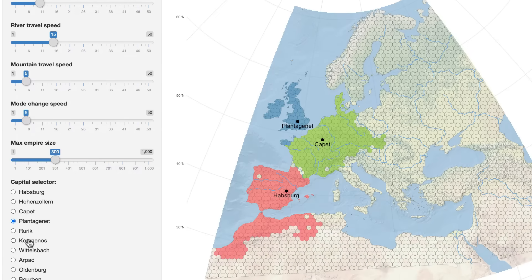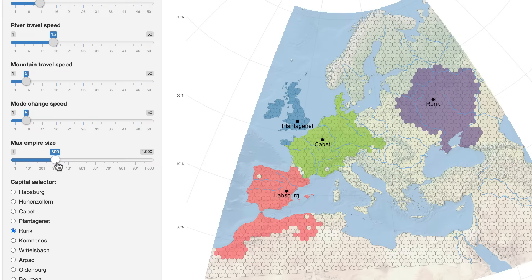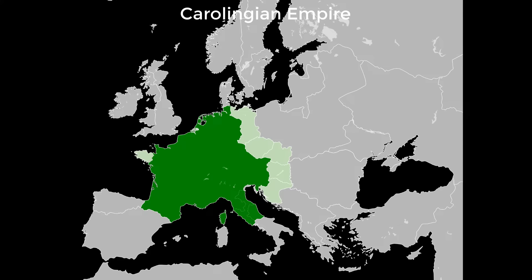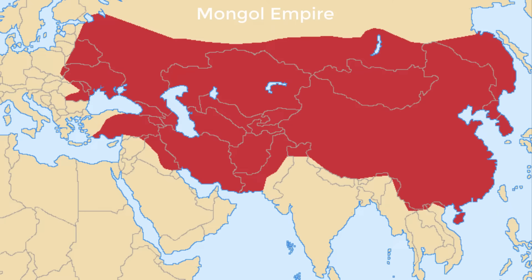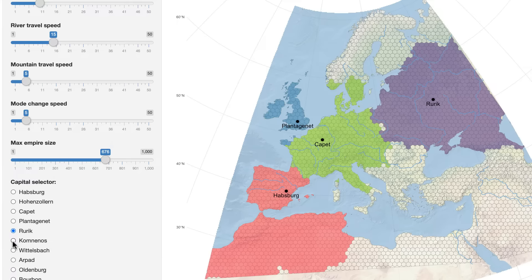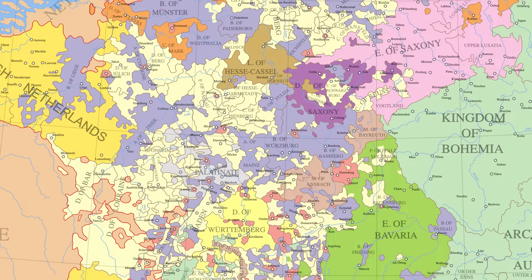I am fascinated by how different states in different times and places can look. You have the Roman Empire which ruled most of Europe in the 2nd century, the Carolingian Empire in the 9th century, and the gigantic Mongol Empire in the 13th century. But in some places you instead have fragmentation into a myriad of small states, such as here in Germany after the Thirty Years' War in the 17th century. It's a mess.